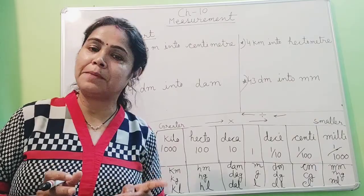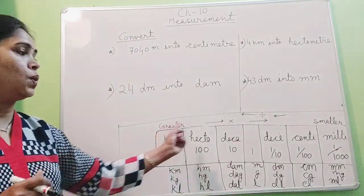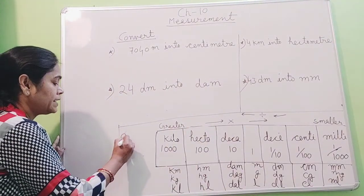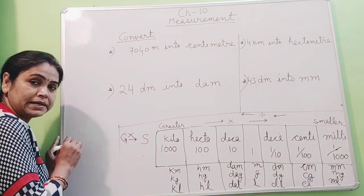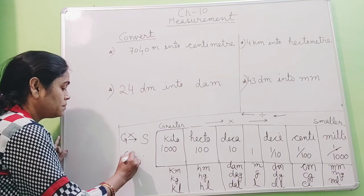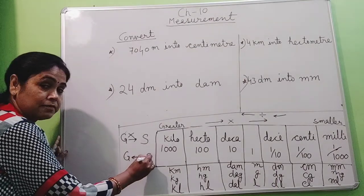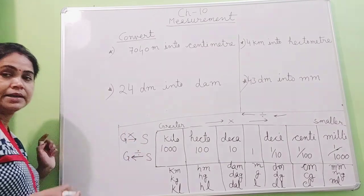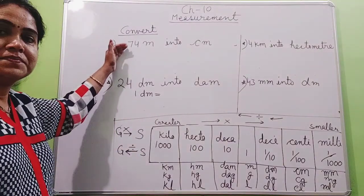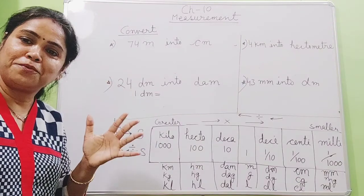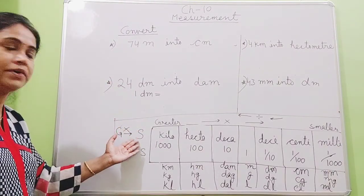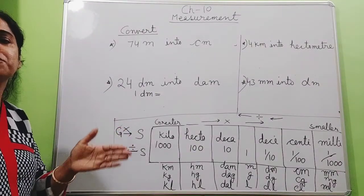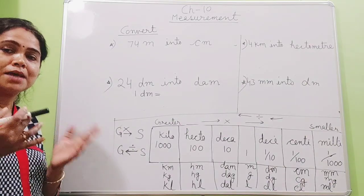In conversion, keep in mind: from greater unit to smaller unit, you multiply. From smaller unit to greater unit, you divide. If there are 2 jumps, multiply by 100. If there are 3 jumps, multiply by 1000, and so on. The arrows show which direction we are moving.